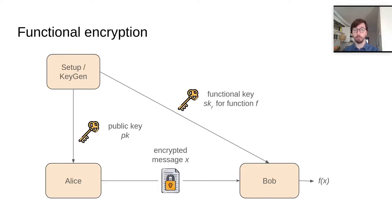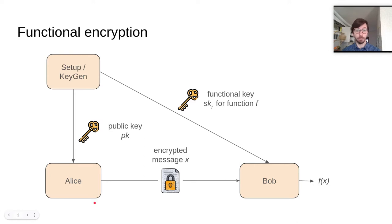Let's start with some basics. Functional encryption, introduced by Sakai and Waters in 2005, can be seen as a generalization of public key encryption, where we have a trusted third party being able to produce public keys that enable an encryptor, say Alice in our case, to encrypt message x using the public key.